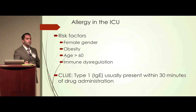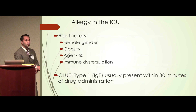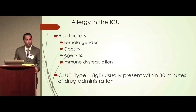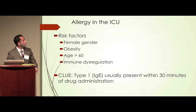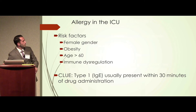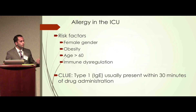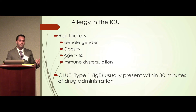Are some patients more predisposed to allergic reactions? Yes. Females have a higher predisposition — almost three to one — of having an allergic response to a medication. Obese patients can be harder to assess because skin discoloration may obscure a rash. Age over 60 and immune dysregulation also increase predisposition to IgE-mediated responses. The clinical clue is timing: most patients who are going to get an allergic reaction will do so within 5-15 minutes. If it's happening a day later, it's usually not an IgE-mediated response — this happens within the first 30 minutes.